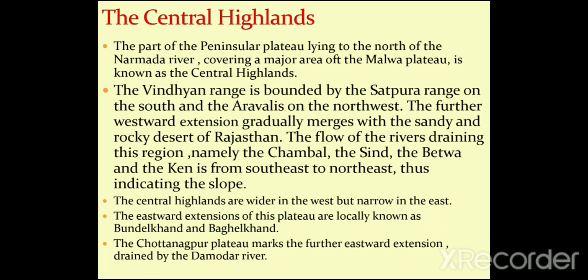The rivers draining this region — the Chambal, Sindh, Betwa, and Ken — flow from south-west to north-east, indicating the slope of the land. The central highlands are wider in the west but narrow in the east.